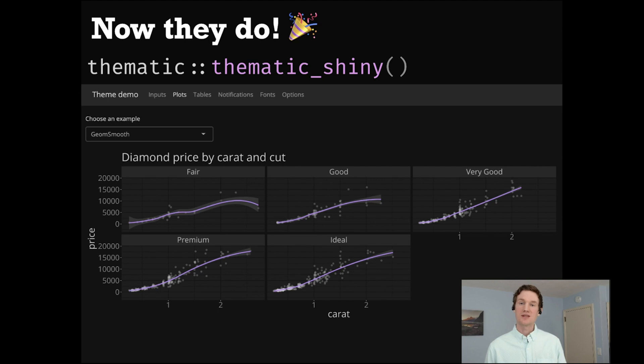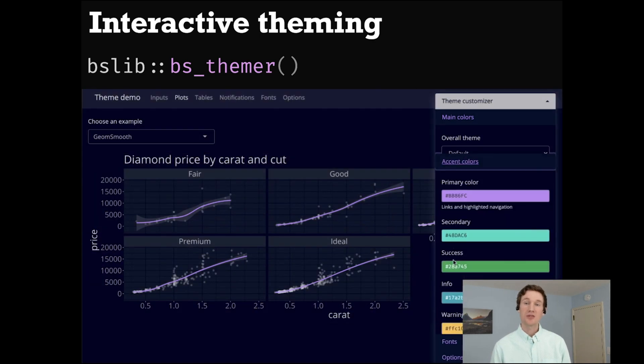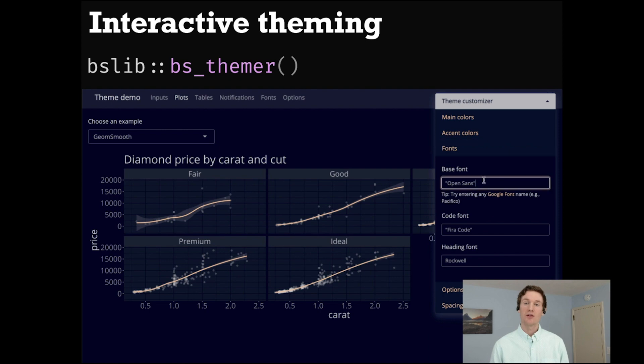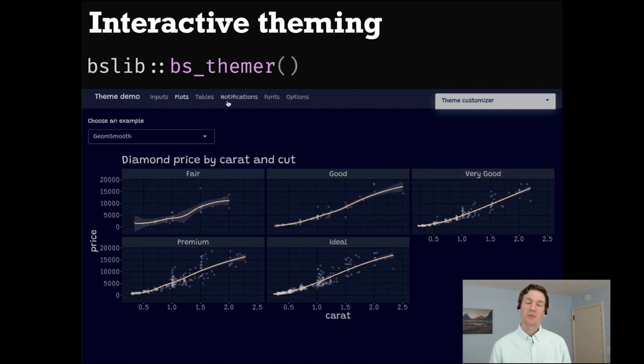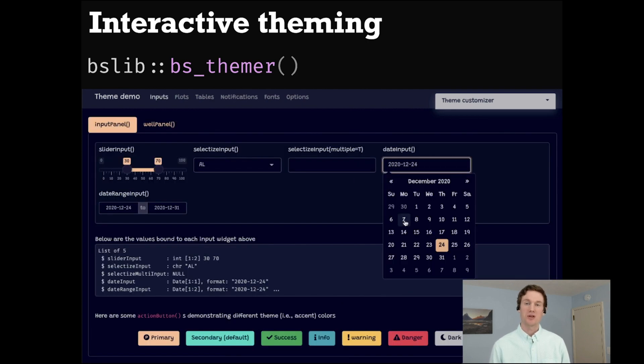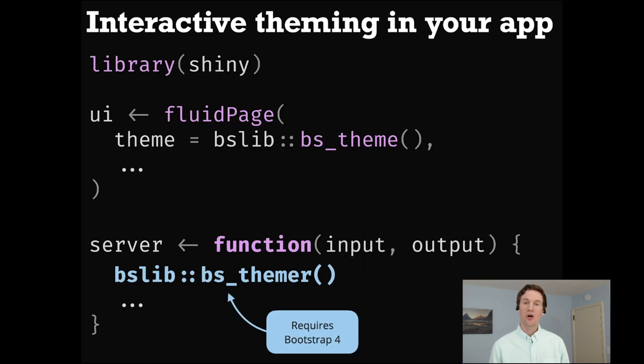bslib also provides an interactive theming tool, which allows you to quickly try out different theme settings and see how that theme renders in real time. This theming tool can be used with any Shiny application by calling the bs_themer function. The only requirement is that you call the bs_themer function inside of the server function and that you're using this interactive themer with Bootstrap 4.